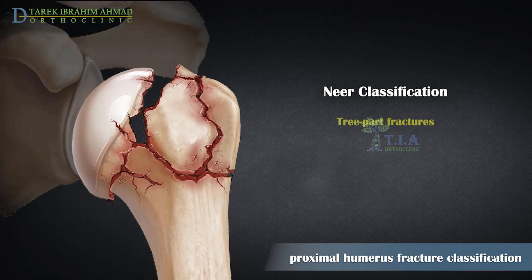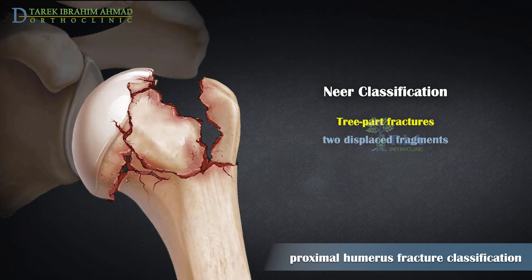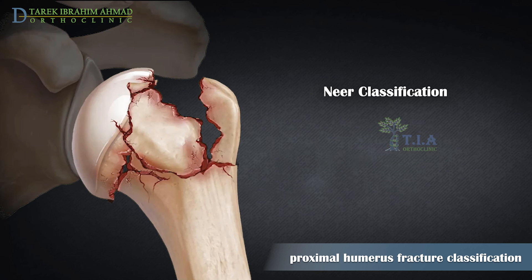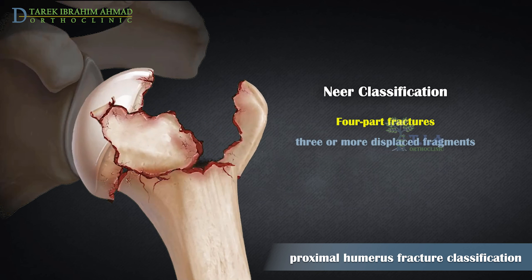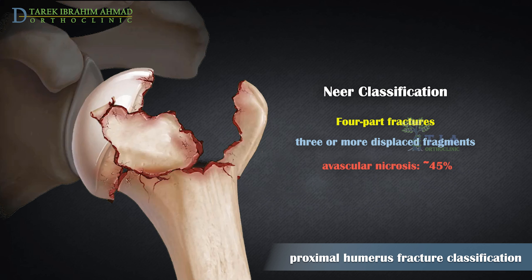Three-part fractures are defined by two displaced fragments, but the humeral head remains in contact with the glenoid. Four-part fractures are defined by three or more displaced fragments; the articular surface remains in contact with the glenoid. This is a serious injury with a high risk of avascular necrosis.